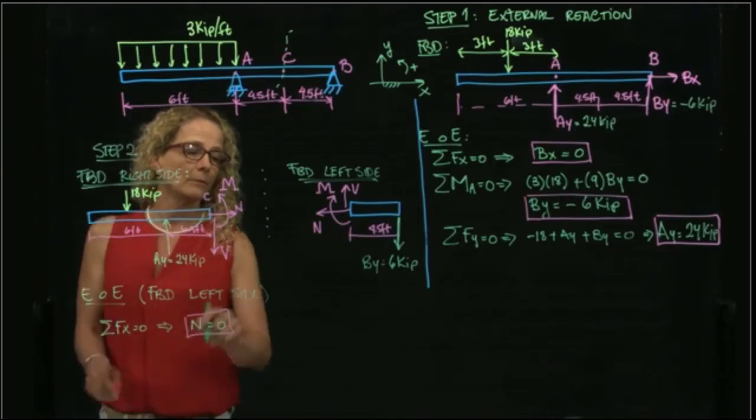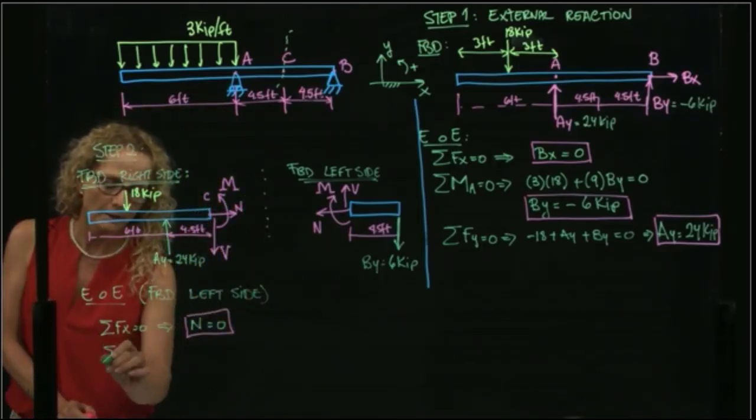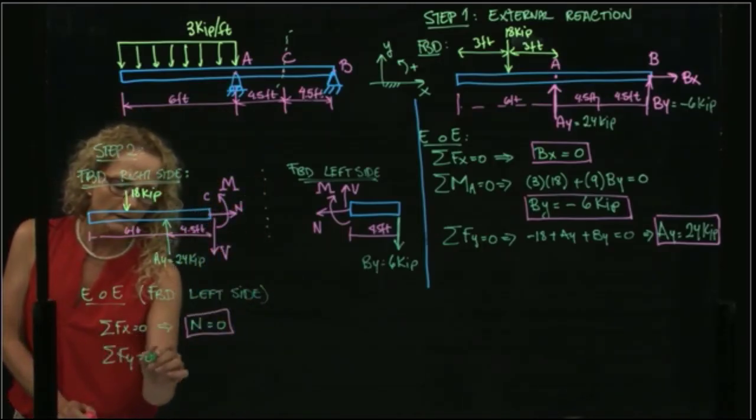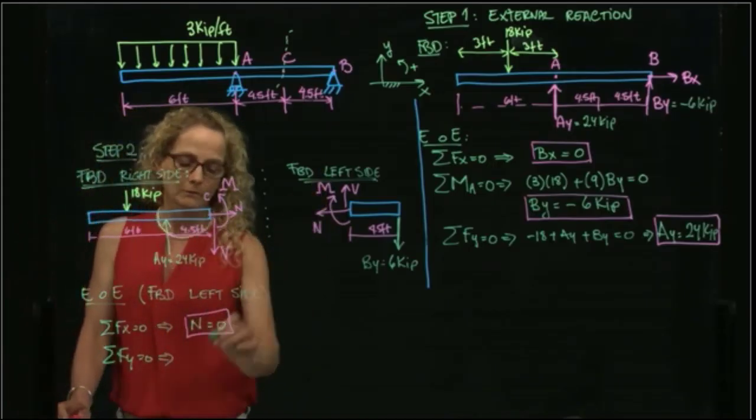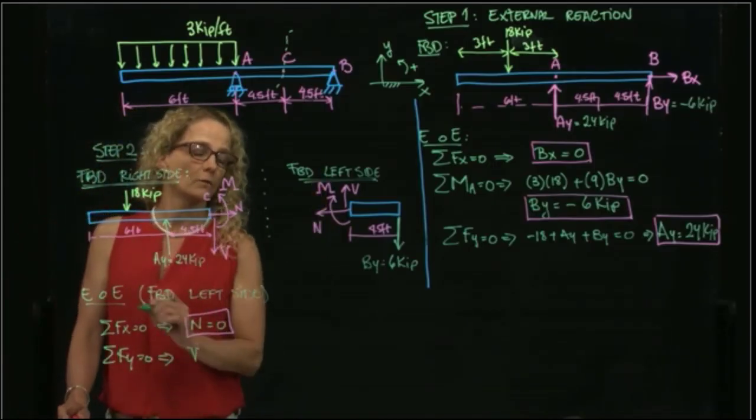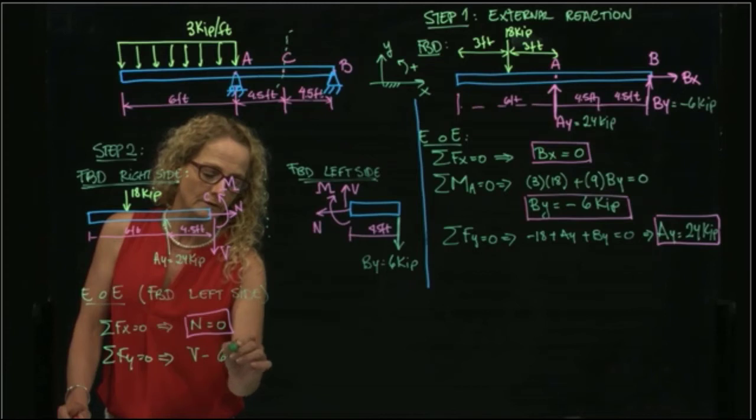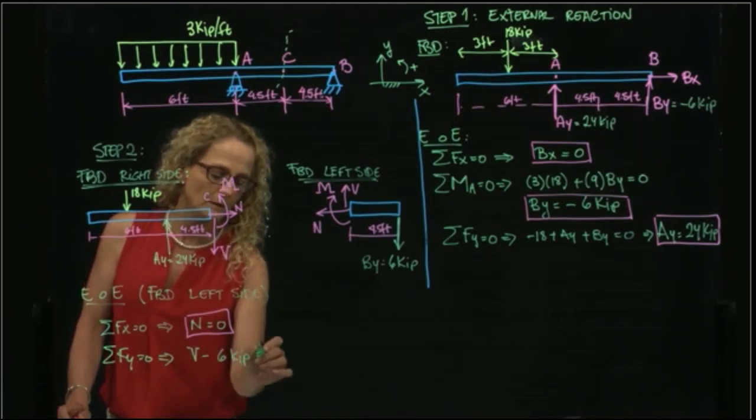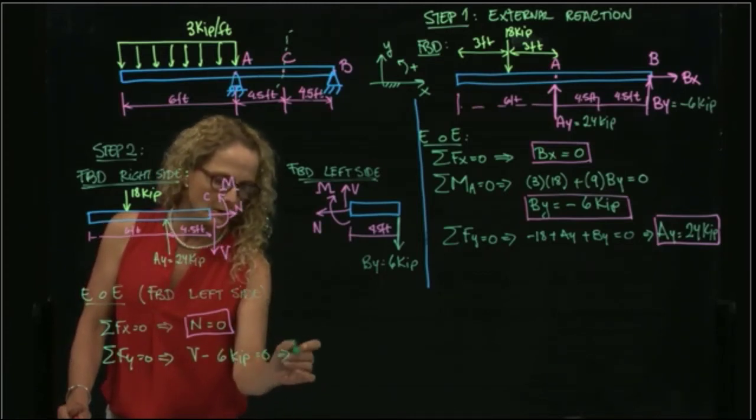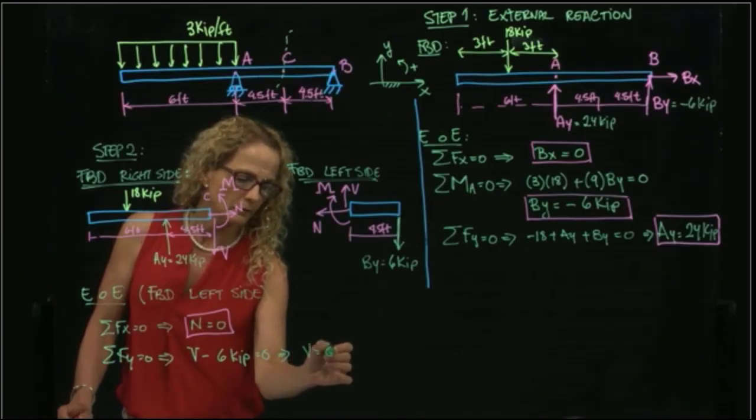Then when I add forces in Y, I have that V, which is my shear force, minus six kip is equals to zero. Therefore, I have that V is equals to six kip.